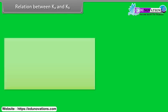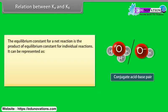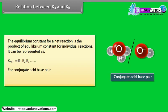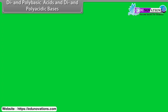Relation between Ka and Kb. The equilibrium constant for a net reaction is the product of equilibrium constants for individual reactions: K_net = K1 × K2 × K3, and so on. For a conjugate acid-base pair, Ka × Kb = Kw.